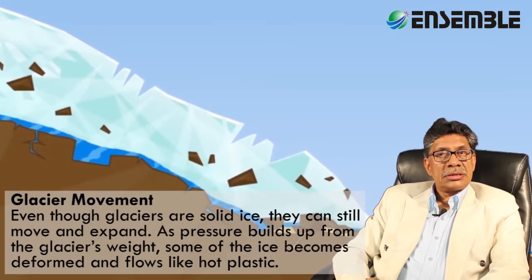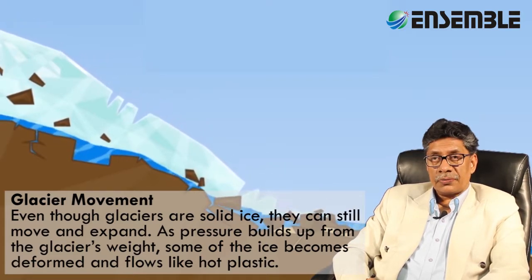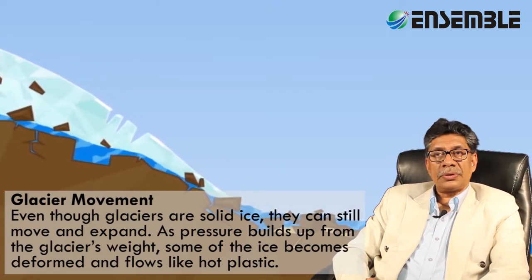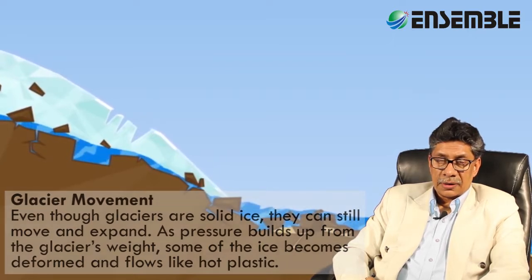Even though glaciers consist of solid ice, they can still move and expand. As pressure builds up from the glacier's weight, some of the ice becomes deformed and flows like hot plastic. It is this moving glacier that is responsible for carving out different types of topographic features. The speed of glacial movement is variable, and it is this variable movement that causes glaciers to depict certain types of features.